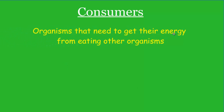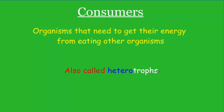Those were the producers. Now we're going to move on to consumers. Consumers consume things, meaning they are organisms that need to get their energy from eating other organisms. They're not like producers, who can provide themselves with energy — consumers have to go out and get something else. Just like producers are called autotrophs, consumers, because they eat something other than themselves, are called heterotrophs. Hetero means other, and trophic means to eat, so we can call them heterotrophs as well as consumers.